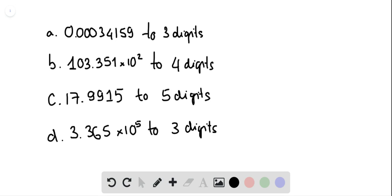For A, it's 0.00034159 to three digits. So three significant digits would be the three, four, one. We round it, so the five means this one will become two. So the answer, we need to write it in scientific notation, which would be 3.42 times 10 to the minus 4.